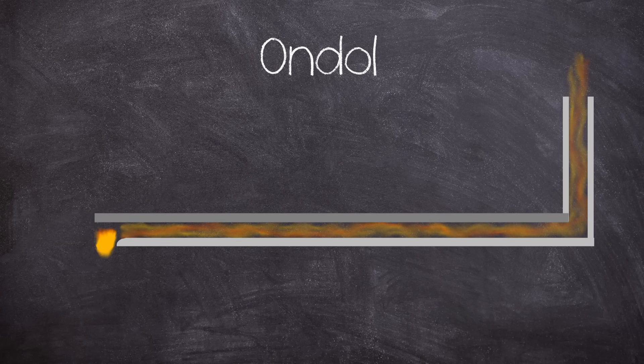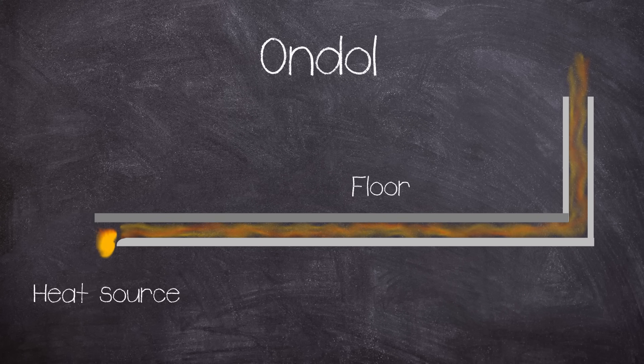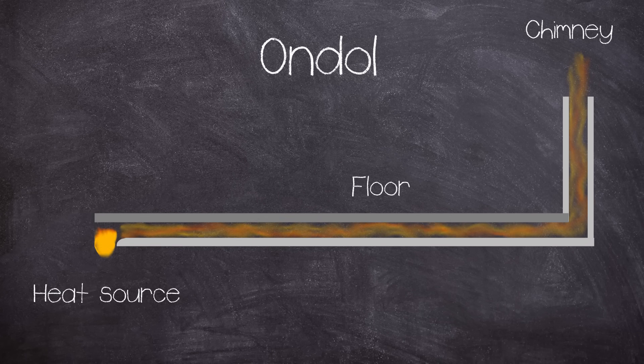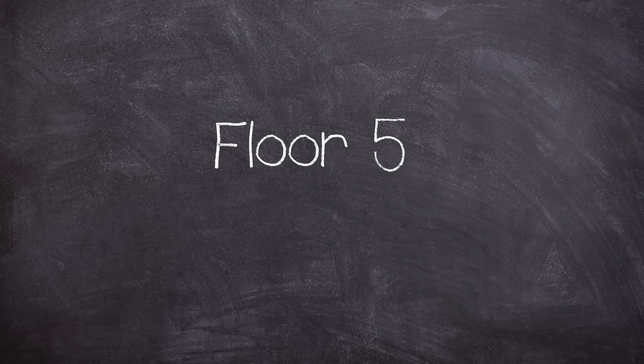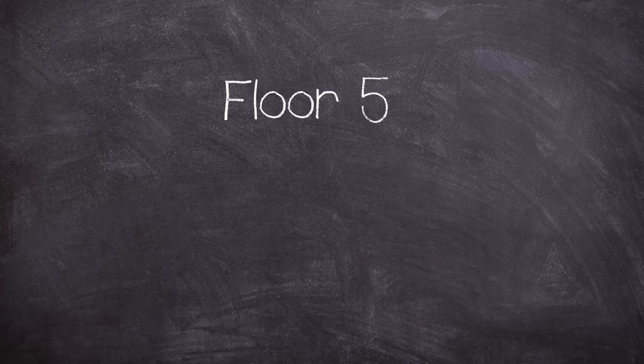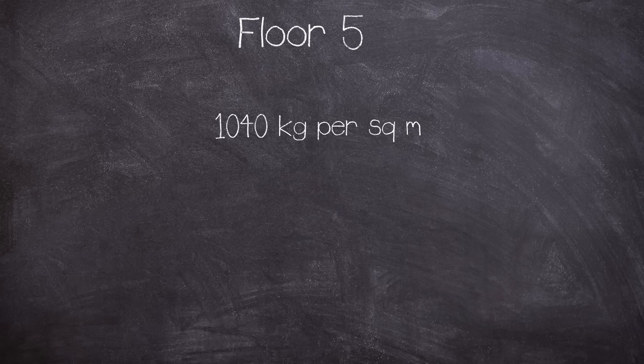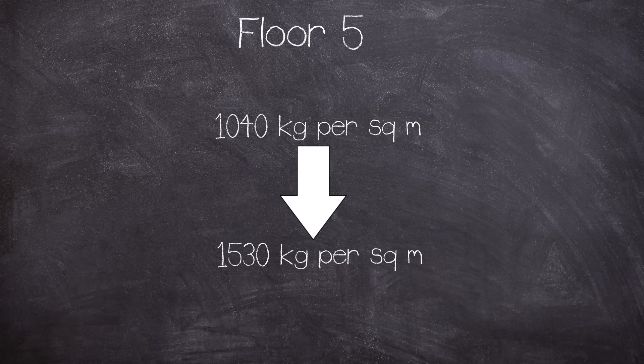Not only that, but a Korean style of underfloor heating known as Ondol was specified for the 5th floor. This would include a concrete floor with heavy heating pipes running within. The original plans for level 5 had a calculated predicted load of 1040kg per square meter, but the new configuration had 1530 square meters, nearly a 50% increase in weight strain on the already minimised supporting columns.